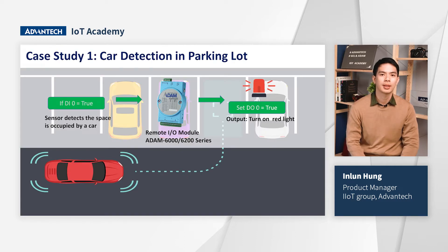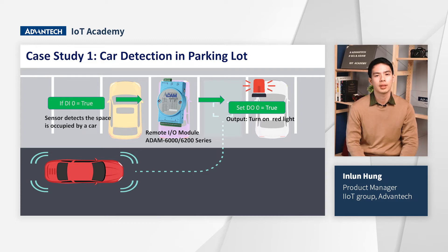A vehicle detection system is very convenient for people who want to find a parking space. Once a car occupies a parking space, triggered vehicle detection sensors will send input signals to the ADAM I/O module. With GCL, we can easily create control logic using a graphic interface and send an output signal to turn on the red light.